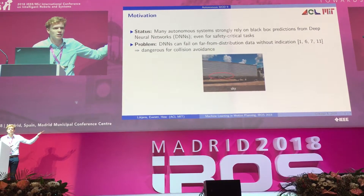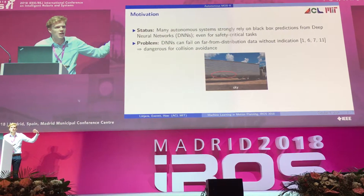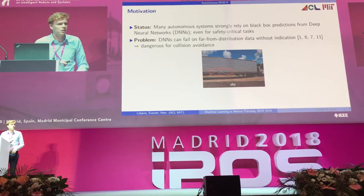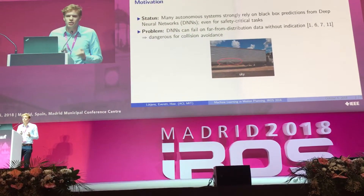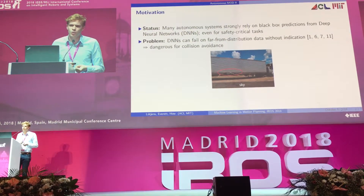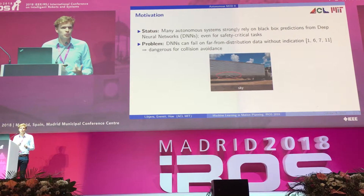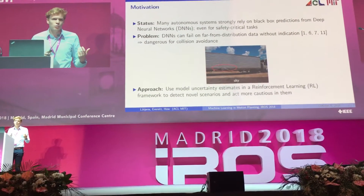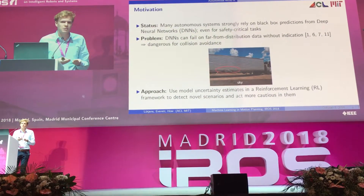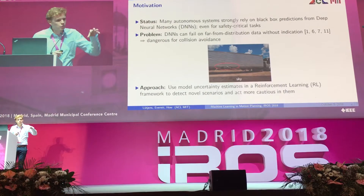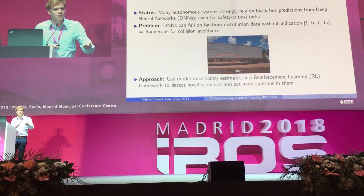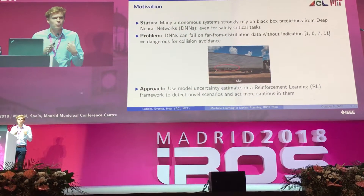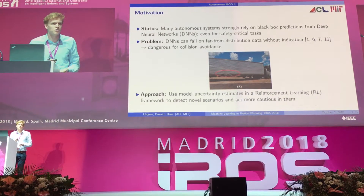For example, here we can see a white truck that's been misclassified as sky. Our goal is to continue using the powerful models of deep learning but enrich them for safety-critical tasks. What we do is use model uncertainty estimates, fusing them into a new course learning framework to detect novel scenarios and act more cautiously in them.